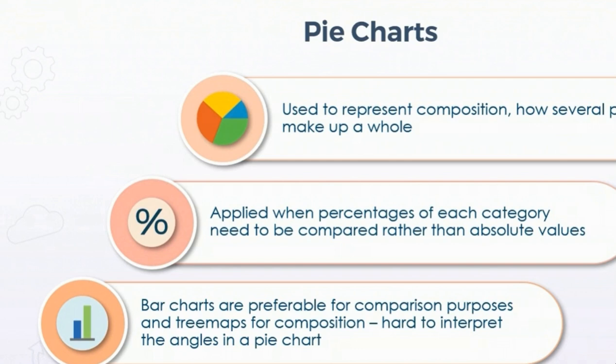Pie charts are used to represent composition — how different parts make a whole. They are also useful when the percentage of each category needs to be compared rather than absolute values. Bar charts are preferable for comparing values, and tree maps are for composition. It is very hard to interpret angles in a pie chart, so pie charts are not ideal for precise comparison but are useful for a quick general view.